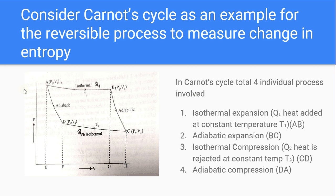In the Carnot cycle, isothermal expansion occurs in the forward direction, isothermal compression in the backward direction, adiabatic expansion in the forward direction, and adiabatic compression in the backward direction. When the forward direction is done and the backward direction is repeated, the process is named a reversible process. So these four processes as a whole constitute a reversible process, and the Carnot cycle is considered a reversible process.